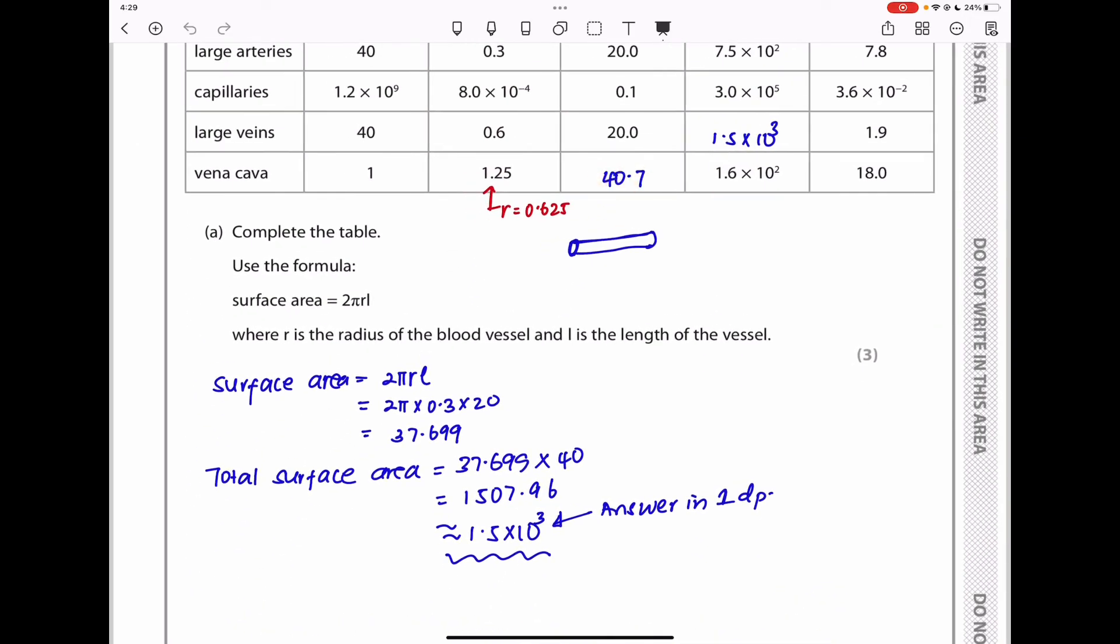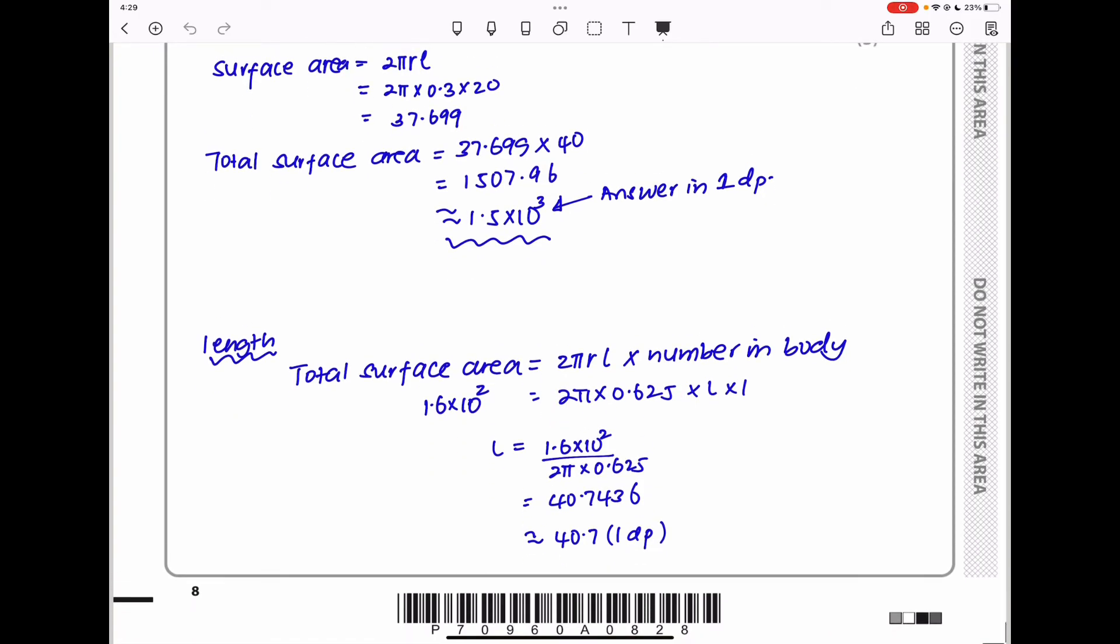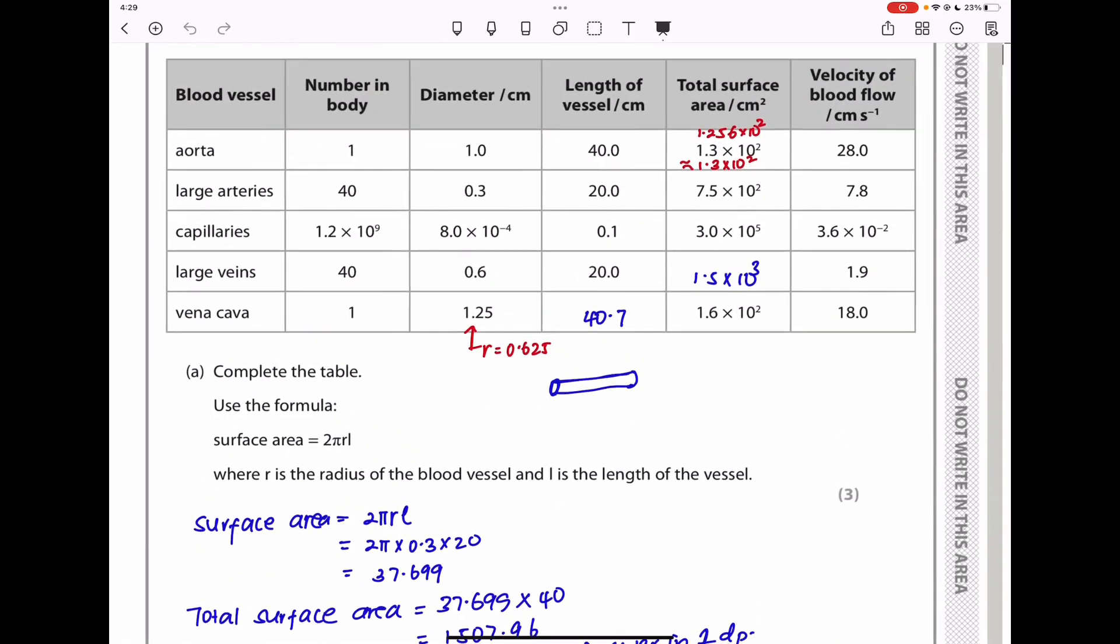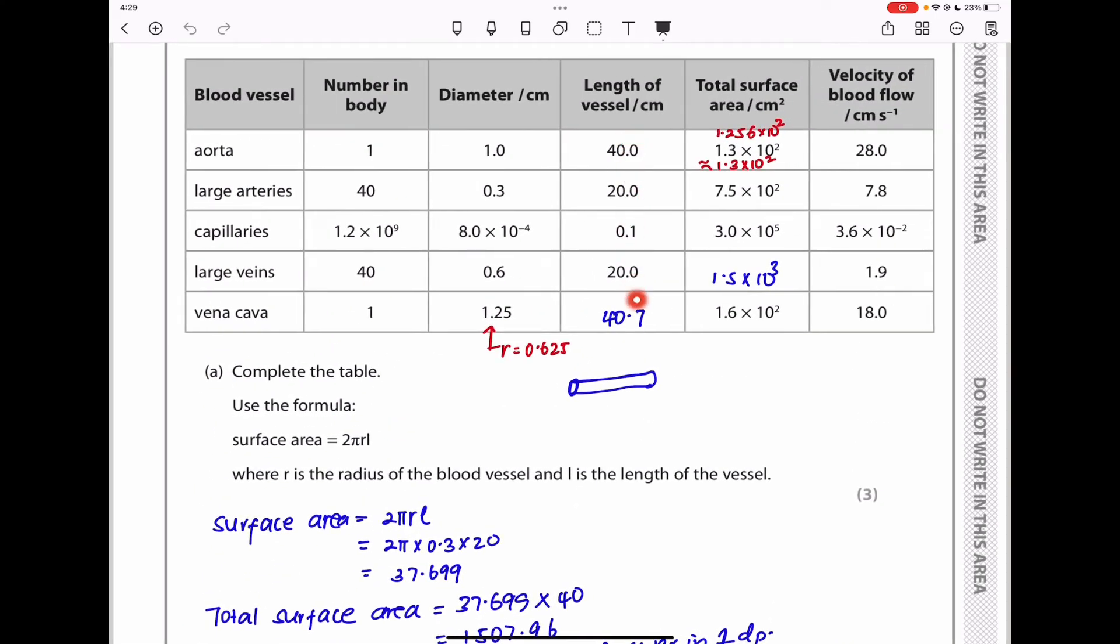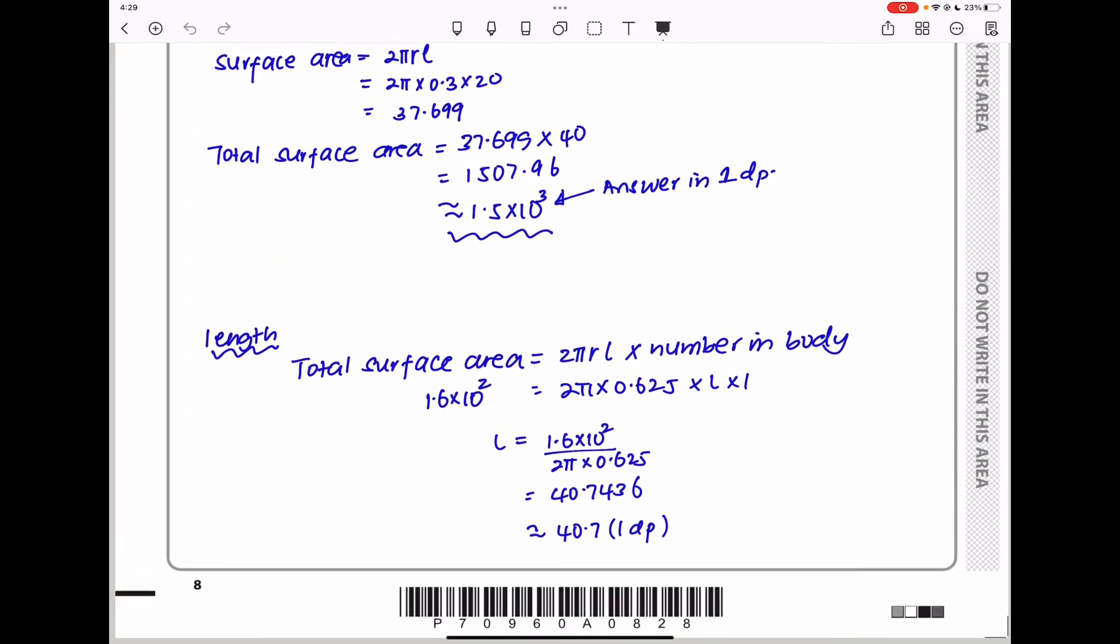Going on to the next part, finding this value, I use the same formula. Since I knew that total surface area is that times the number in the body, this is given to me. So 2πr, I have the radius but I do not have the l, times the number in the body, which is 1. Then I made l the subject. L will be this divided by everything else. The answer came out as 40.7, and I left it to one decimal point. So it's 40.7. So I hope everybody gets that idea.